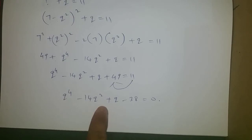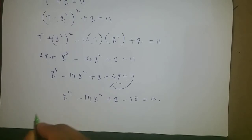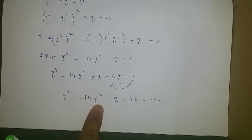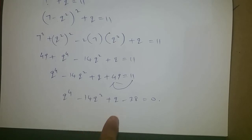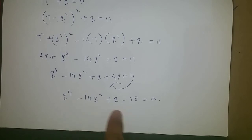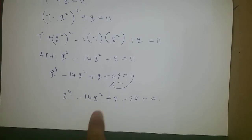So I will use the trial (assume) method. I will test q = 1 and check whether it gives zero. If not, I'll try q = -1, then +2, -2, +3, -3, +4, -4, and so on, checking one by one.